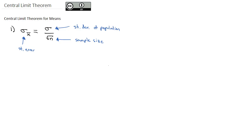Anytime we're dealing with a sample where there's multiple things being averaged together, we're going to recalculate the standard deviation to become the standard error. So it's important when we're doing a problem to note: are we talking about a single individual item, or are we talking about a group that's been averaged together? Let me show you an example.